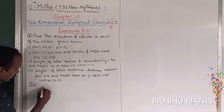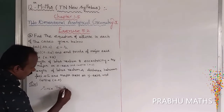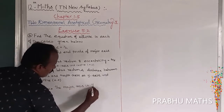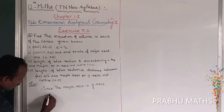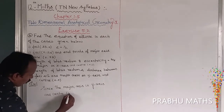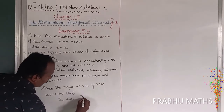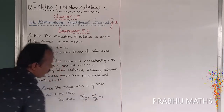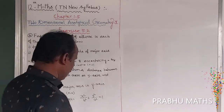Since the major axis is the y-axis and the center is (0,0), the general equation is x²/b² + y²/a² = 1.